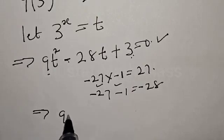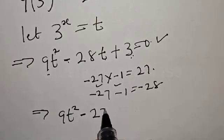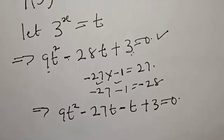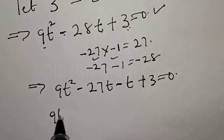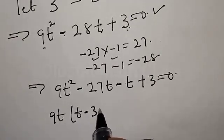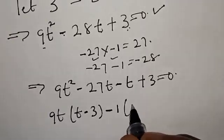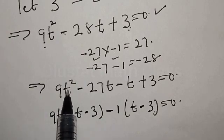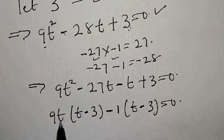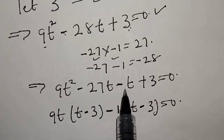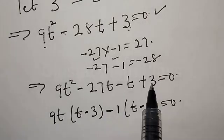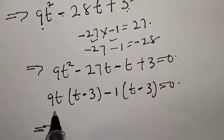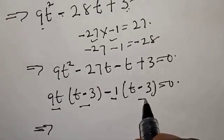This implies that we have 9T squared minus 27T minus T plus 3 equals 0. Factoring this out: 9T into T minus 3, minus 1 into T minus 3, equals 0. Let's verify: 9T times T gives 9T squared, 9T times minus 3 gives minus 27T, minus 1 times T gives minus T, and minus 1 times minus 3 gives plus 3.